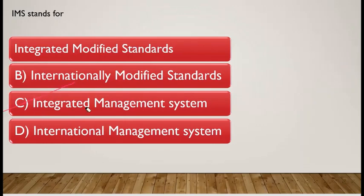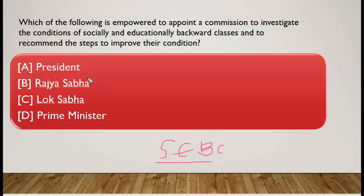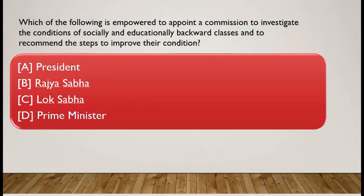Which of the following is empowered to appoint a commission to investigate the condition of socially and educationally backward classes and to recommend steps to improve their condition? Note it is socially and educationally backward classes — not economically. Only the President has the power to appoint a commission to look into the conditions of socially and educationally backward classes.